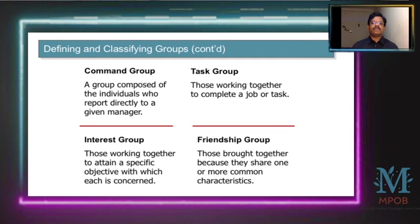A command group is composed of individuals who report directly to a given manager. A task group consists of those working together to complete a job or task. Interest groups form when people join together based on common interests, and friendship groups form based on personal relationships. Several such groups exist within organizations, and the dynamics and relations within and between these groups affect the workplace.